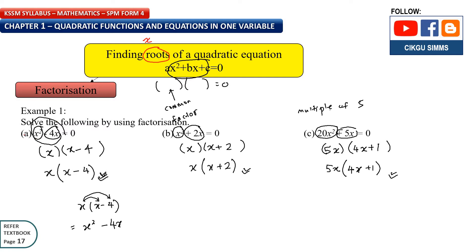Let's see the first question: Solve the following by using factorization. Using factorization you will have two brackets, and then to solve you will need to find the value of x. So x squared minus 4x equals 0. The front part you can make into two brackets like this, and then equals 0 you just write there. You get rid of this bracket — it becomes x and in the bracket x minus 4 equals 0.